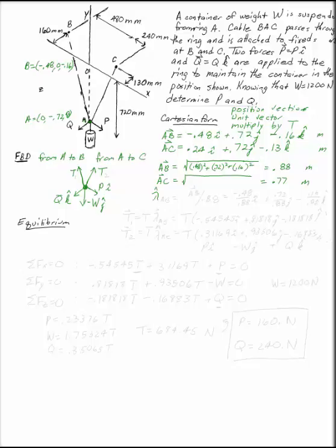So when you divide by that, you get the unit vector in the AB direction is the actual vector AB divided by 0.88. If you multiply that out, what you end up with is...